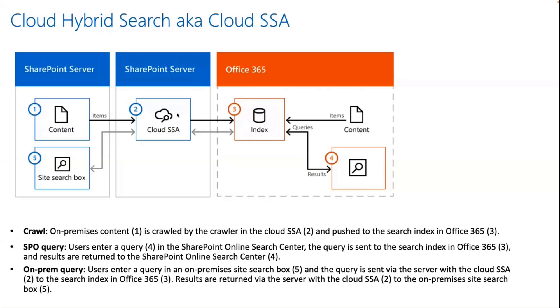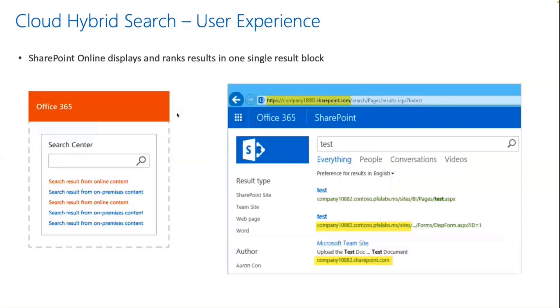It provides the best of both worlds. Users can search in SharePoint Online, and users sitting on-prem can search in the on-prem SharePoint search box as well. In the end-user experience, people can search on both and they will get interleaved results.